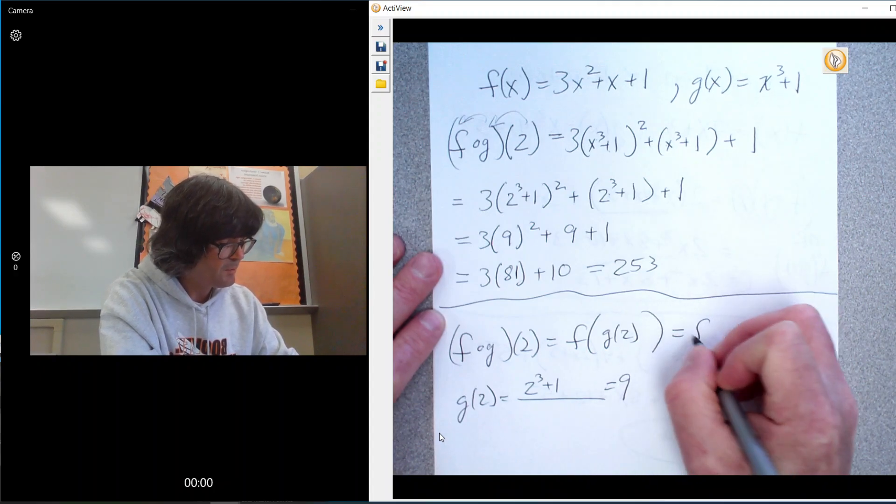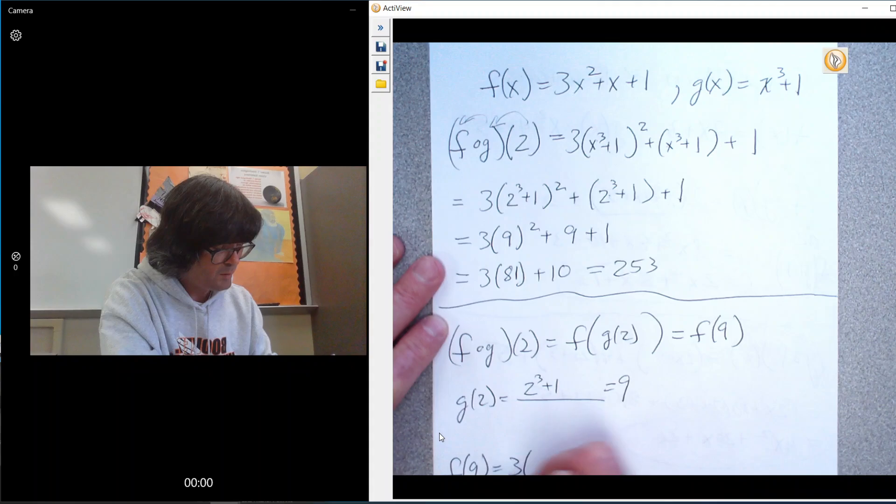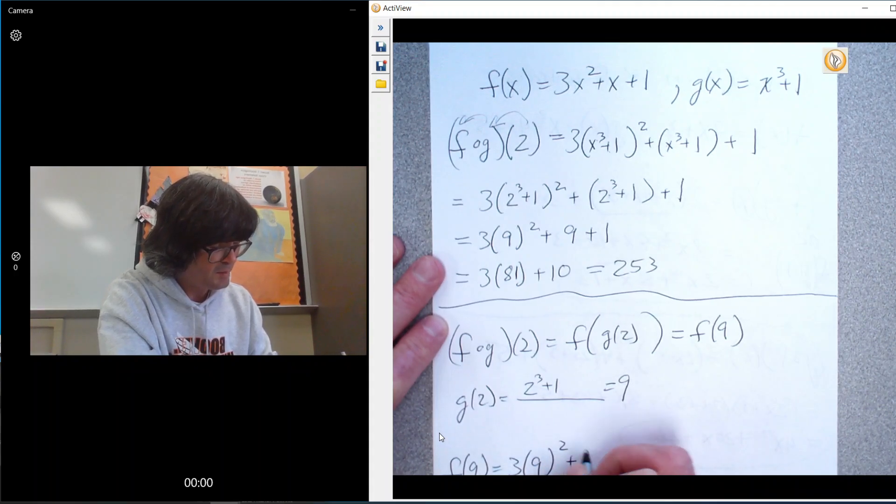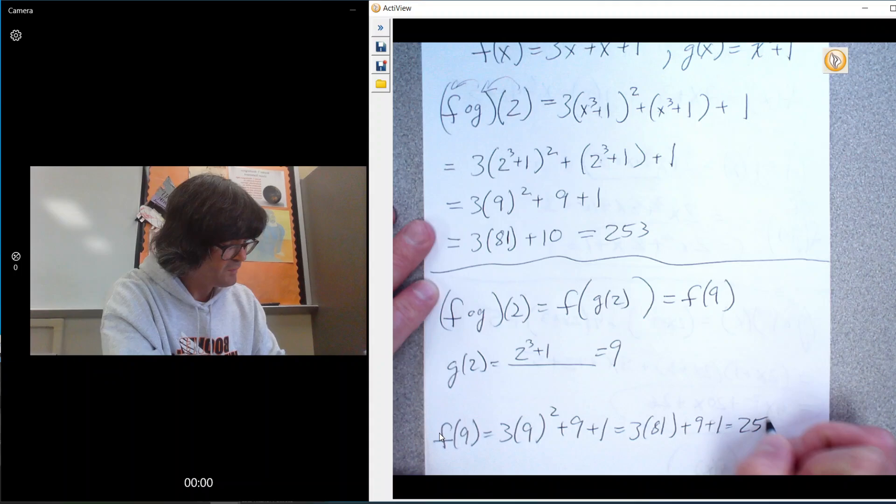So actually, you're really dealing with f of 9. And then you can see what f is. So f of 9 is going to be 3 times 9 squared plus 9 plus 1. It comes out to be the same thing, obviously. 3 times 81 plus 9 plus 1 is still 253.